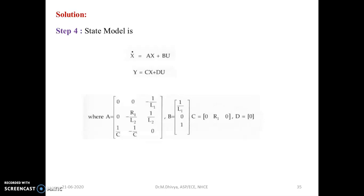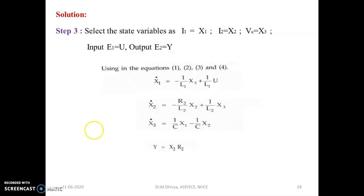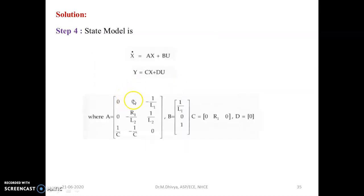We can write in the generalized form: x dot equals A times x plus B times u, and y equals C times x plus D times u, where A is the system matrix, B is the input matrix, C is the output matrix, and D is the transmittance matrix. The input matrix B is obtained from the equations x1 dot, x2 dot, and x3 dot. For x1 dot, the coefficients of x1 and x2 are 0 and x3 is minus 1/L1, giving the first row as [0, 0, -1/L1].